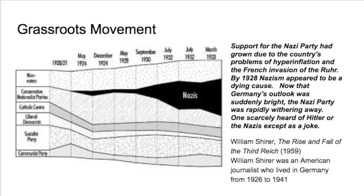He continued this grassroots movement, really targeting lower middle-income families. As William Shirer notes in Rise and Fall of the Third Reich, the Nazi Party had grown due to the country's problems of hyperinflation and the French invasion of the Ruhr. By 1928, Nazism appeared to be a dying cause — Germany's outlook was suddenly bright, the Nazi Party was rapidly withering away, and one scarcely heard of Hitler or the Nazis except as a joke. It's not until 1929 with the Great Depression that Hitler becomes a much more popular figure.